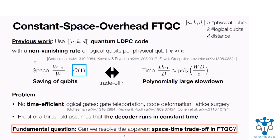This problem arises because no time-efficient implementation method for logical gates is known. Several gate implementation methods for these codes are known, such as those based on gate teleportation, code deformation, and lattice surgery, but none of them has been proven to be time-efficient in general. Even more problematically, the existing proof of the threshold for constant space overhead FTQC assumes that the decoder runs in constant time, no matter how large the code size grows for error suppression. But in practice, we are indeed facing a challenge arising from the non-zero runtime of the decoder.